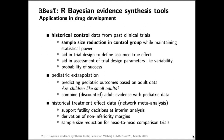RBesT has been designed for applications in drug development. The primary application when we wrote the package was for the use of historical control data from past clinical trials, for the purpose of using it for future clinical trials with the aim to reduce the sample size in the control group while maintaining statistical power. We now see various further applications in drug development.